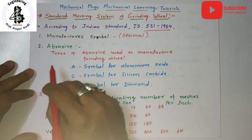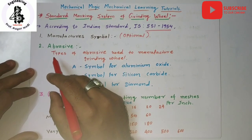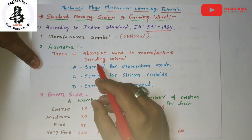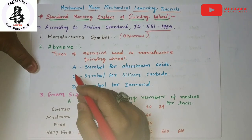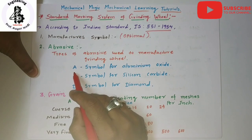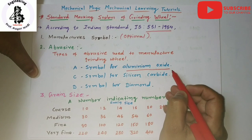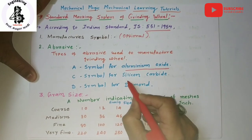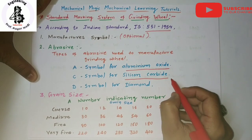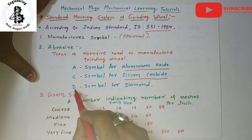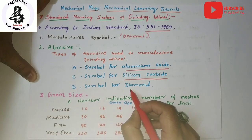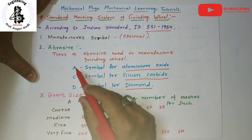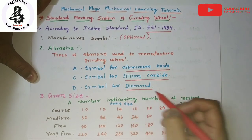The second indicator is abrasives — a very important part for selection of a grinding wheel. Different kinds of abrasive particles are used in making a grinding wheel. There are generally three kinds of indications representing different symbols: A stands for aluminium oxide, C stands for silicon carbide, and D stands for diamond materials.